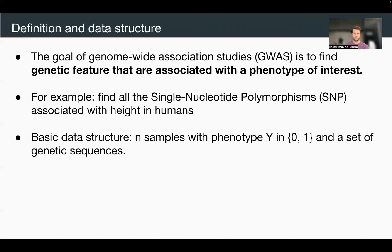So first, what does GWAS mean in the most broad term? It's genome-wide association studies — finding some association between a phenotype of interest and genetic features. Both those things can be defined quite broadly. For example, finding all the SNPs, single nucleotide polymorphisms, associated with height in humans. Height would be the phenotype of interest and the SNP would be the genetic feature. In our more specific problem, we're going to consider a binary phenotype — zero or one — and a set of genetic sequences.